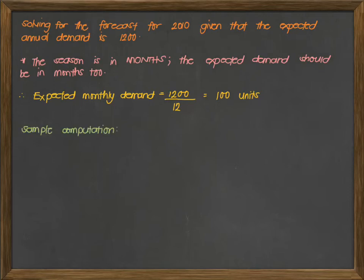We have the following sample computation. If you want to forecast the value for January, we are just going to multiply your expected monthly demand by your seasonal index, which in this case is 100 times 0.957, which will give us an answer of 95.7 units. Usually, we round this off. This will become 96 units for January.